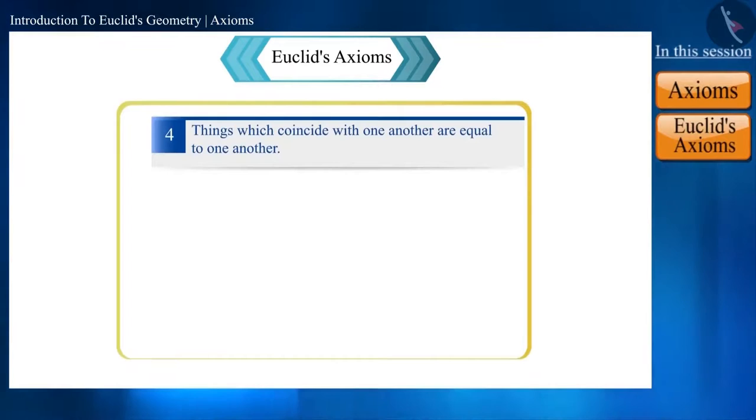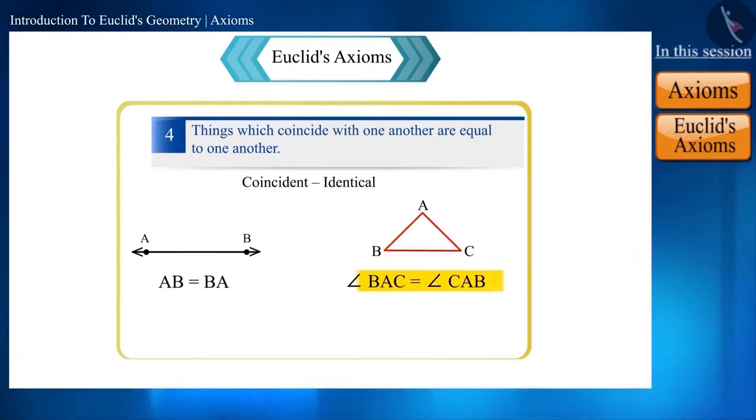According to Euclid's fourth axiom, things which coincide with one another are equal to one another. Coinciding or identical, or if we say that they are the same, then they are equal to each other. Like, line AB is equal to line BA, because these two names represent the same line. And in this triangle ABC, angle BAC is equal to angle CAB, because these two names represent the same angle.